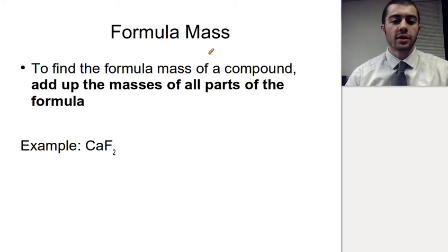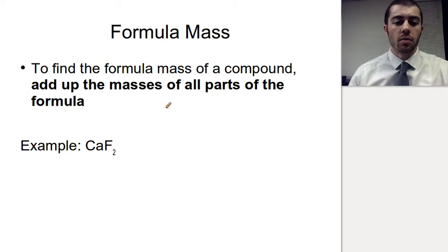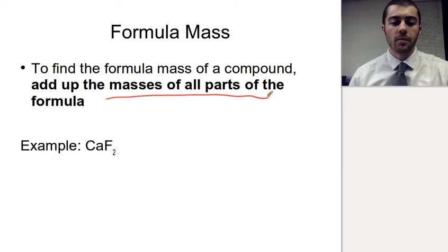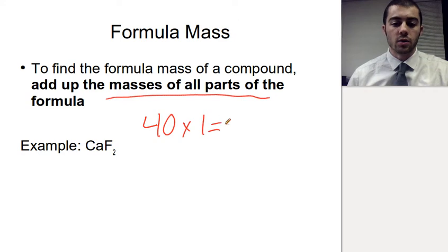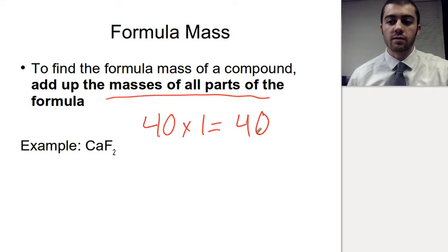For formula mass, what you have to do is add up all the masses of all the parts of the compound. If we take an example like calcium fluoride: calcium, from the periodic table, has a mass of 40. We have one of those, so the total mass that calcium is contributing to this compound is 40 atomic mass units.